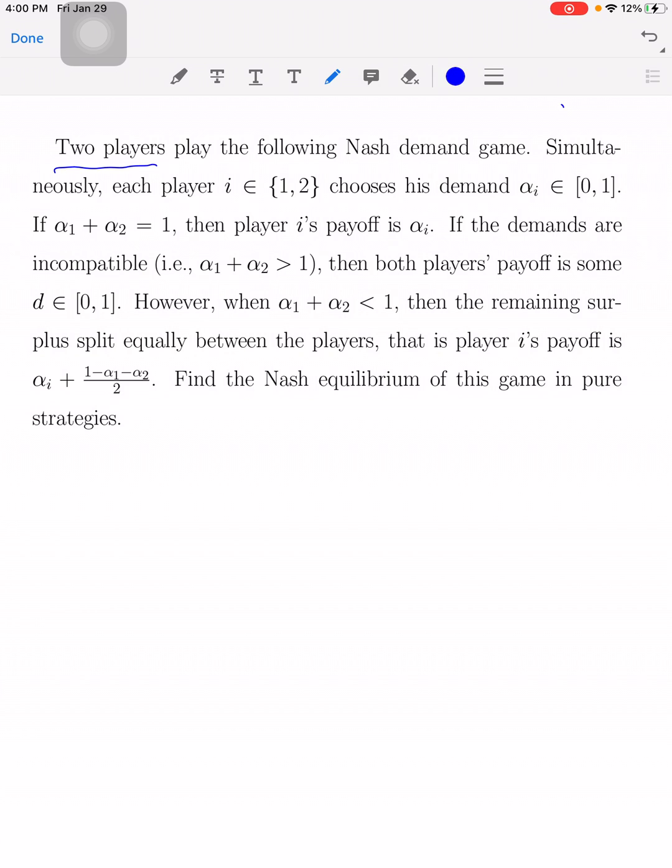There are two players playing the following Nash demand game. Simultaneously and independently, each player i chooses his demand alpha i, which is, for simplification, a number between 0 and 1 in a closed interval.